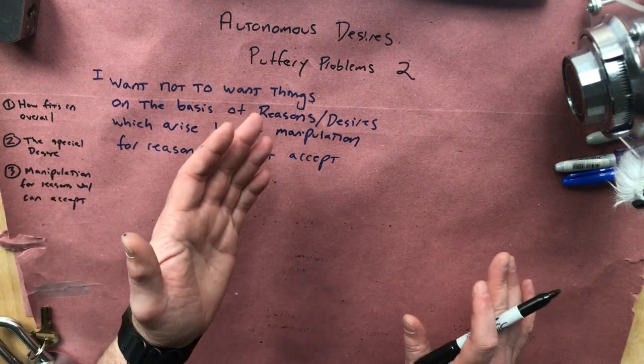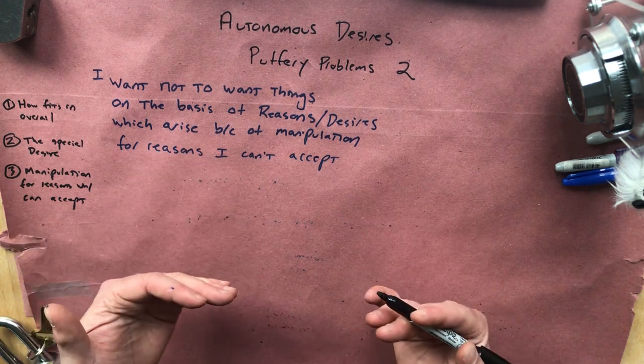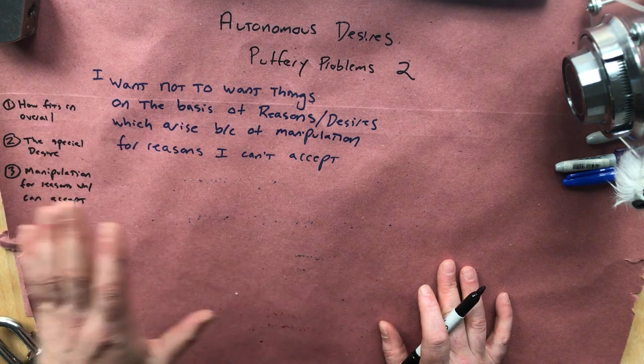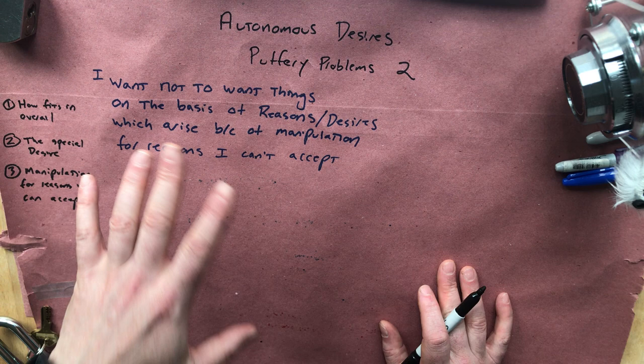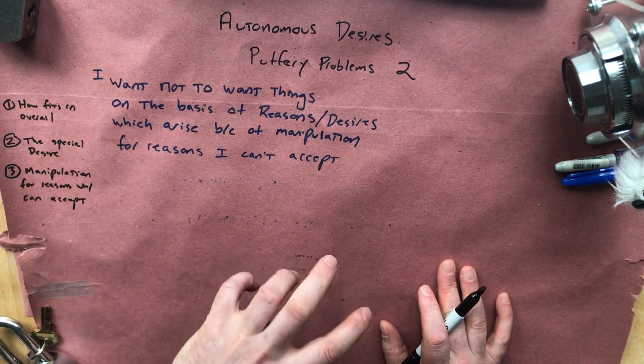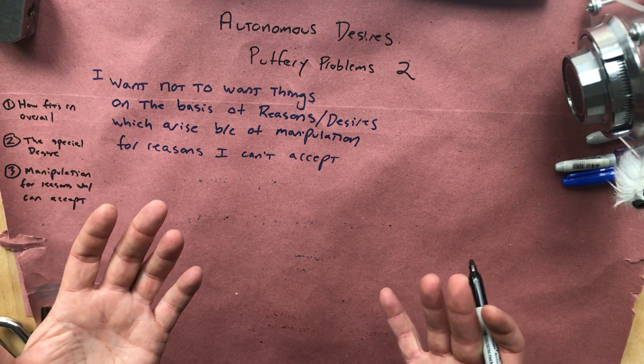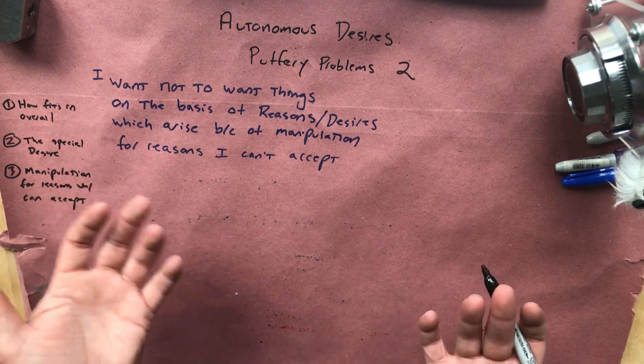Remember that the first problem we had was basically that because the manipulation creates desires in you through this kind of back channel, you don't have any way of knowing why it is you're actually wanting to do stuff. And that's going to interfere with autonomy because if you don't know why you want to act, you can't tell whether or not that possible action is in accordance with your values.